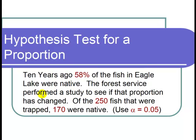The Forest Service performed a study to see if that proportion has changed. Of the 250 fish that were trapped, 170 were native. Use alpha equals 0.05.